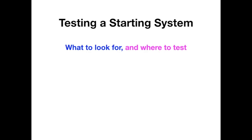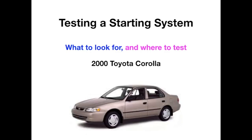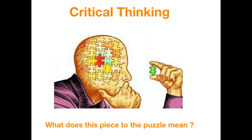Testing a starter system — what to look for and where to test. We're going to be using a 2000 Toyota Corolla in this example. We're also going to be using critical thinking. What does that mean? Well, when you get information you have to be asking yourself: what does this piece of the puzzle actually mean?